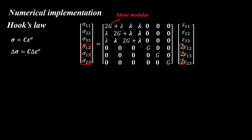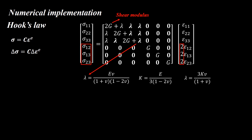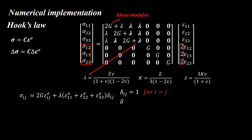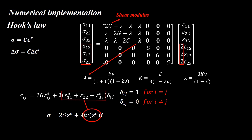In the stiffness matrix, G denotes the shear modulus and lambda is Lamé's constant, which can be expressed in terms of E and nu. We can also use bulk modulus to write Lamé's constant in terms of bulk modulus and nu. Since G appears in all diagonal components of the stiffness matrix, we can relate stress and strain components accordingly. For normal stress components, we add a term involving the Kronecker delta, which is one for normal stresses and zero for shear stresses. Some normal strain terms can be replaced by the trace of the strain matrix, where I denotes the first-order identity matrix.